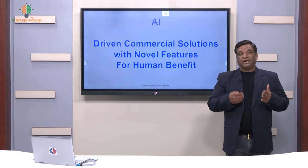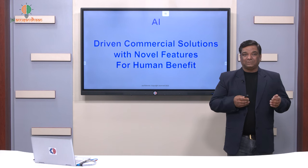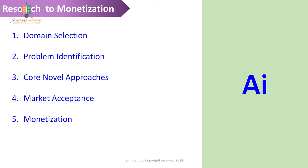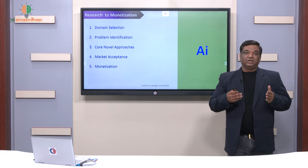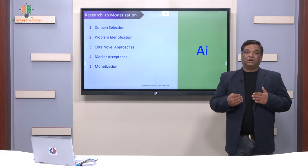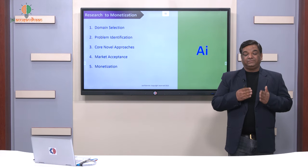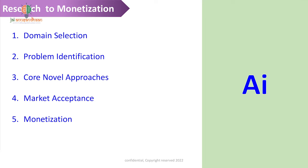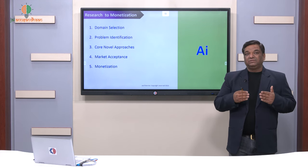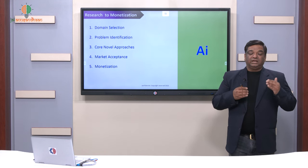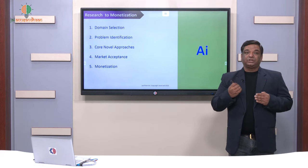In this talk, we'll cover how solutions or ideas can be converted from raw research to make them more business-effective for particular segments or technologies. Starting from five key pointers: how research can be taken up for monetization. First, domain selection — an idea should be predefined within the boundary of a domain. Within that domain, we need to understand what type of problems or issues it is suffering from, so we can come up with the right solution.